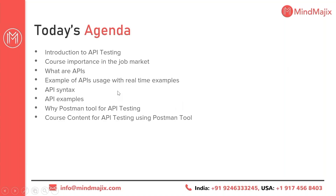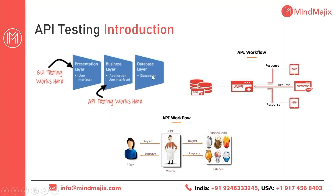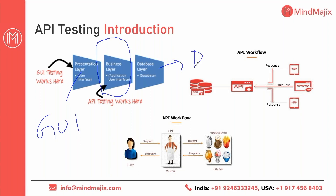This is today's agenda for the demonstration class. In the API testing introduction, the question most people have is: where exactly are APIs developed? The answer is in the business layer. The presentation layer is the graphical user interface you see with your eyes. The storage layer is the database. In between the presentation layer and database layer is another layer called the business layer, and that's where APIs are developed and consumed.